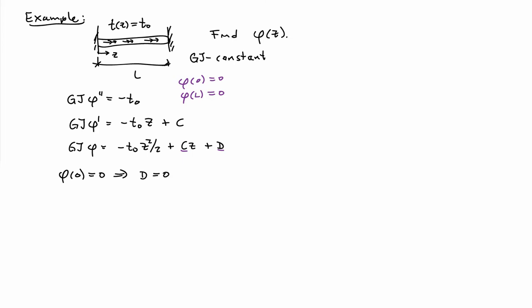The first boundary condition tells me that D equals 0, and the second boundary condition tells me that C equals T0 L over 2. Simply plugging that information into the last equation gives me the two constants of integration.